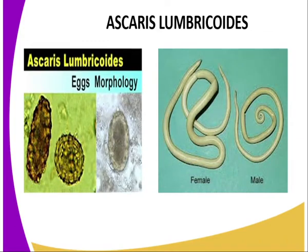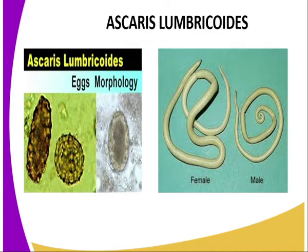The genus Ascaris is the largest nematode parasitic to humans. It is characterized by a brownish-yellow color with mouthparts having three lips, as you can see from our screen. The male is about 25 centimeters long and 0.4 centimeters in diameter, while the female is about 35 centimeters long and 0.5 centimeters in diameter. As you can see, the female is larger than the male Ascaris lumbricoides.